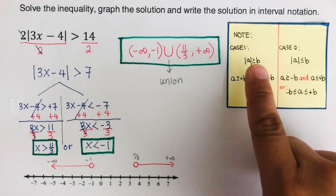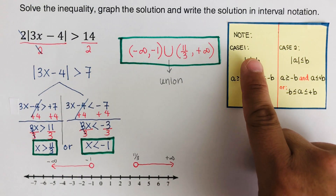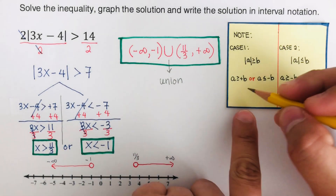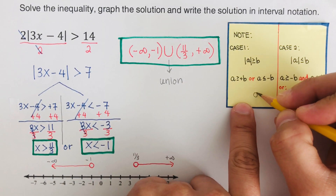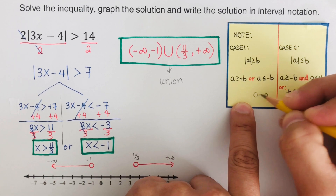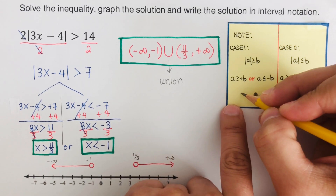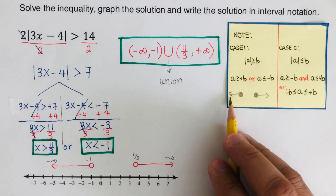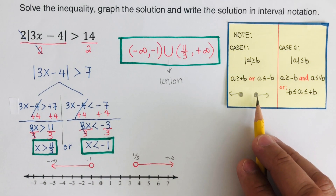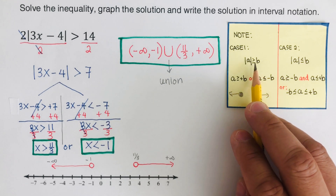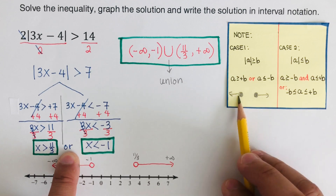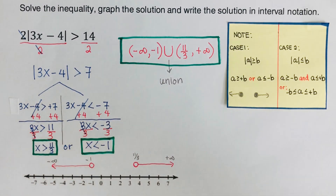For case one — the greater than case — the shape of the graph on the number line will always be two separate parts: one directed to the left and one directed to the right. The conjunction is 'or', so there will always be two graphs going in opposite directions.